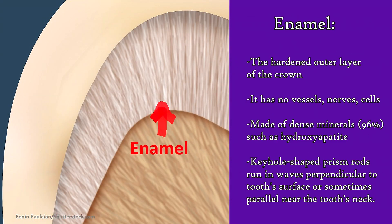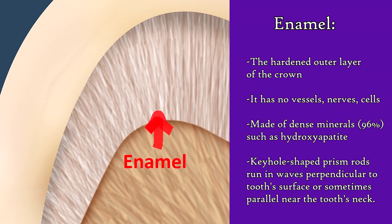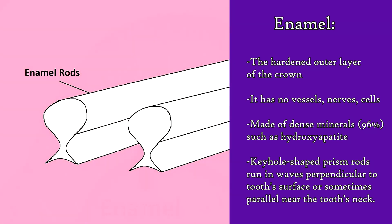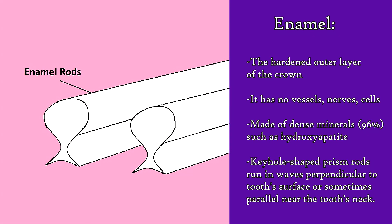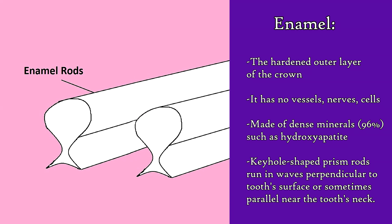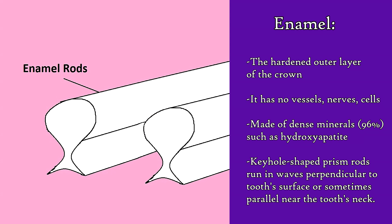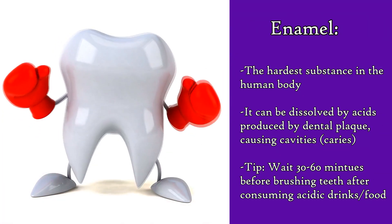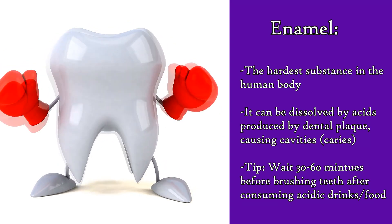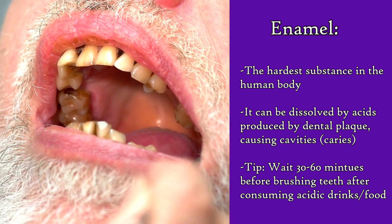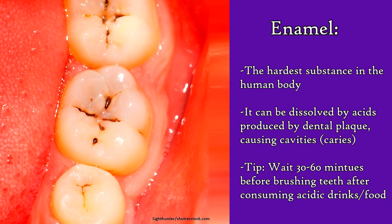Enamel makes up the hardened outer layer of the crown and does not contain living tissue, such as vessels, nerves, or cells. Instead, it is mostly comprised of a dense arrangement of minerals, such as hydroxyapatite, which are formed into tiny prism rods that run in a wave pattern perpendicular to the tooth's surface, though they can also run parallel near the tooth's neck. Although enamel is the hardest substance in the human body, it can be dissolved after prolonged exposure to acid produced by dental plaque, which can eventually lead to the development of cavities.